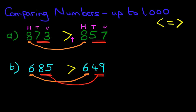And that is how we compare numbers up to 1000, using the number grid from 1 to 100 if required.